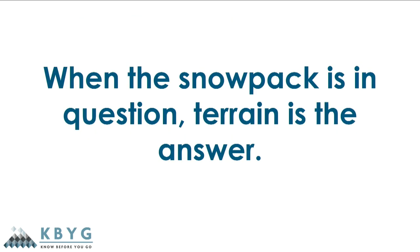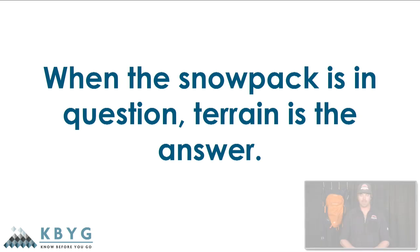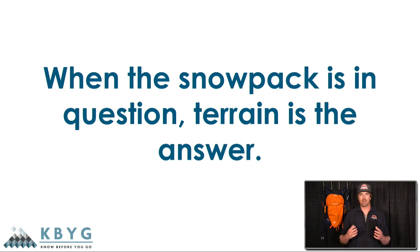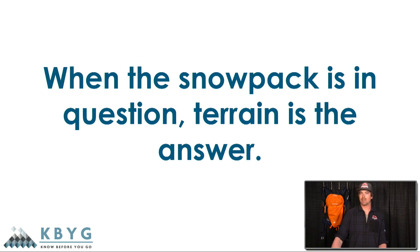So we just talked a ton — terrain traps, slope angles, challenging terrain, simple terrain, complex terrain — but what I want to stress is that when the snowpack is in question, terrain is the answer. We have complete control of where we travel in the mountains. We can decide whether or not to go somewhere with our group. When snowpack's in question, all we have to say is: I'm sticking to terrain under 30 degrees, not connected to anything — and you can still have a great time out there skiing low angle pow.